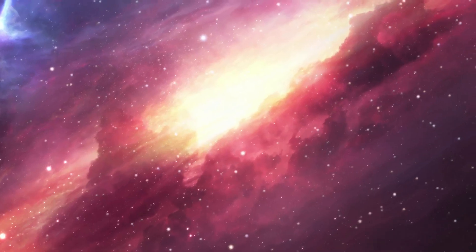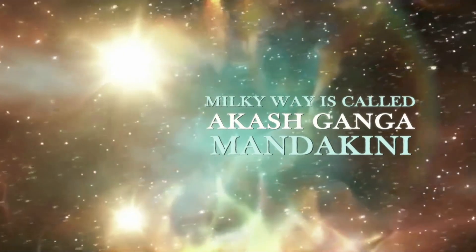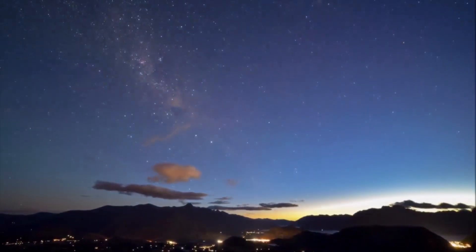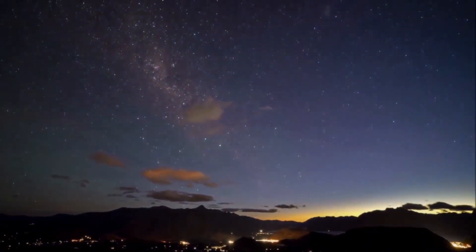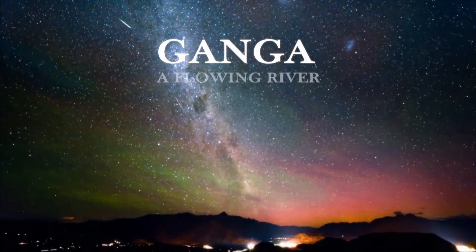In ancient Indian astronomical books, the Milky Way galaxy is called Akashkamga Mandakini. Akashkamga is composed of two words: Akash, meaning sky, and Ganga, representing a flowing river.